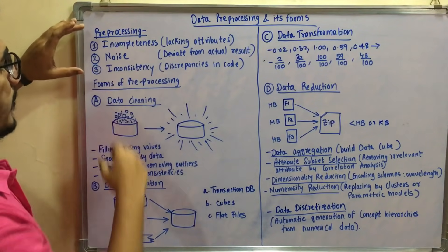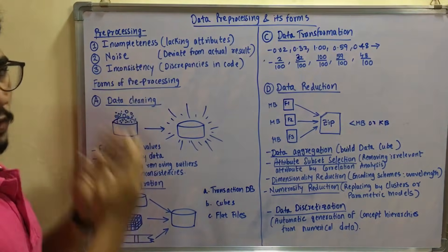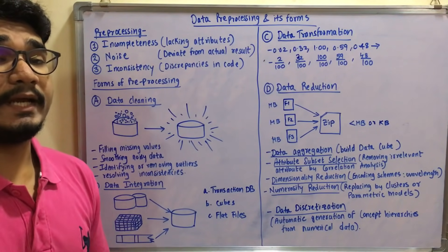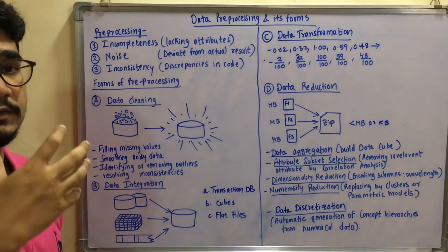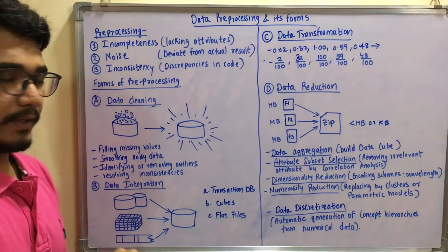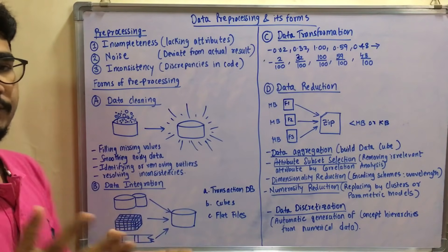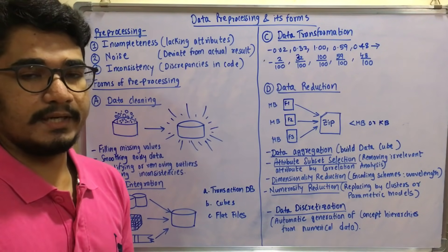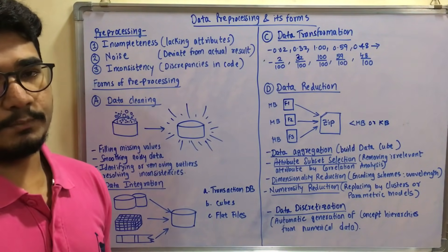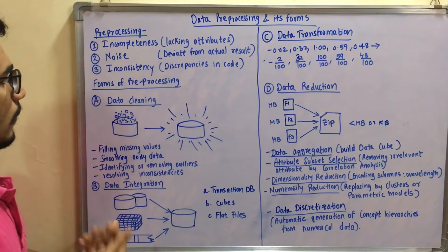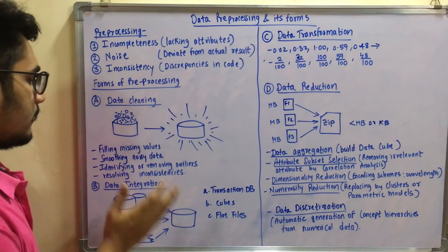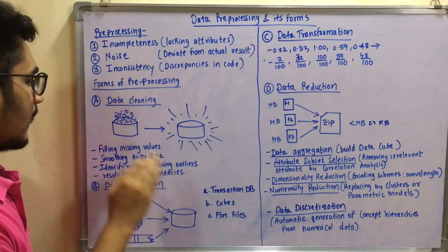To solve these issues, there are four different forms of data preprocessing. The very first is data cleaning, which we discussed in the KDD activity. As shown in the diagram, we take old data and scrub it — like cleaning utensils with a dishwasher — to get purified data. You can clean data by filling missing values, smoothing noisy data, eliminating outliers, and resolving inconsistencies, such as maintaining a consistent file format across systems.